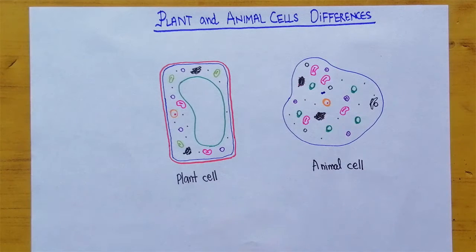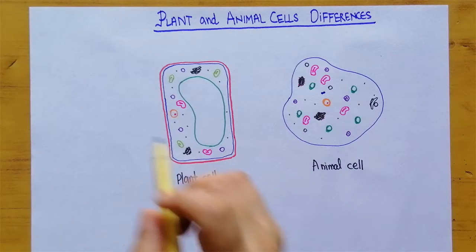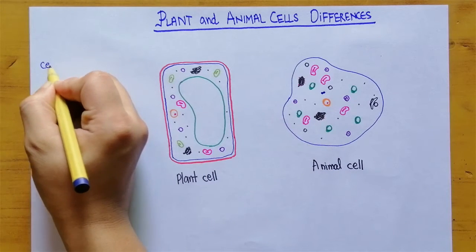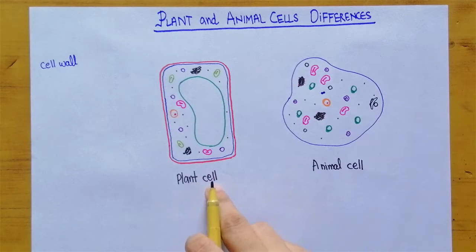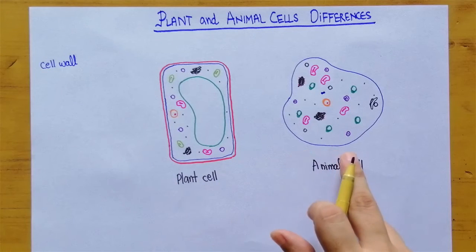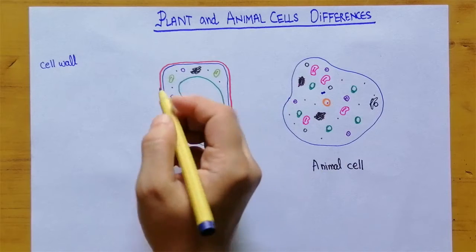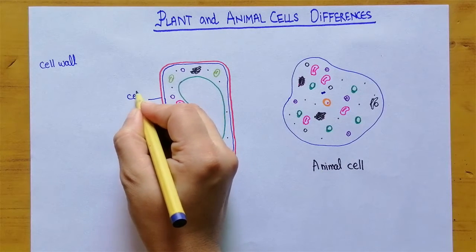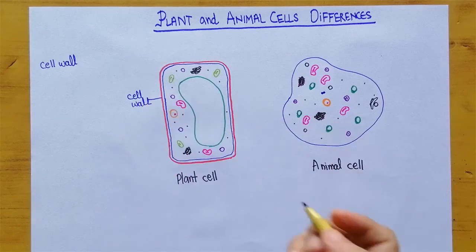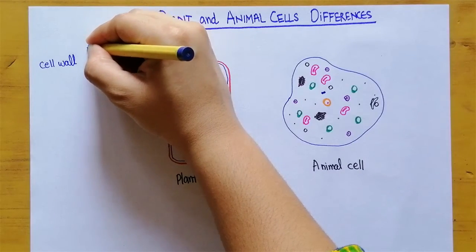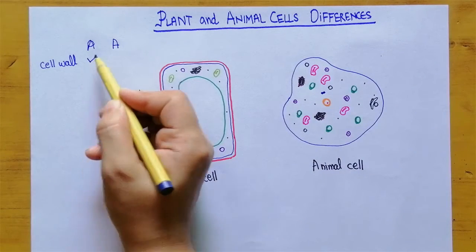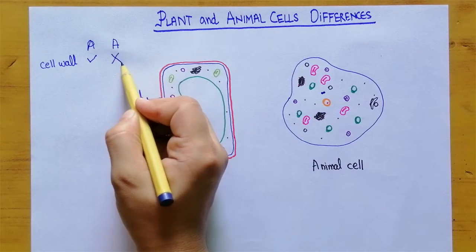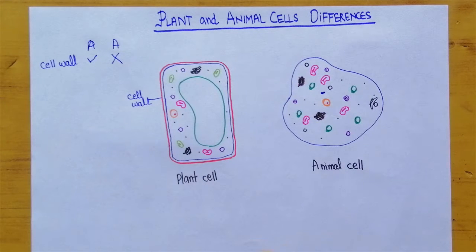The first difference between both types of cells is the cell wall. In the case of plant cells, the cell wall is present, but in animal cells the cell wall is absent. Here, the red color line represents the cell wall. So in the plant cell the cell wall is present, but in the animal cell it is absent.